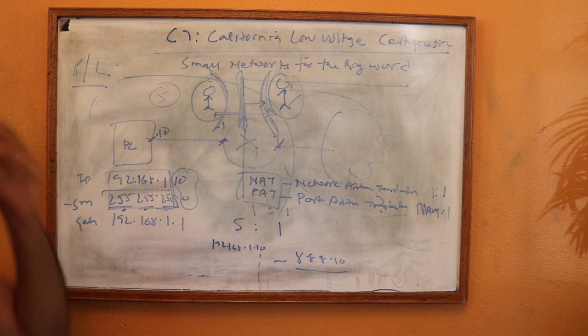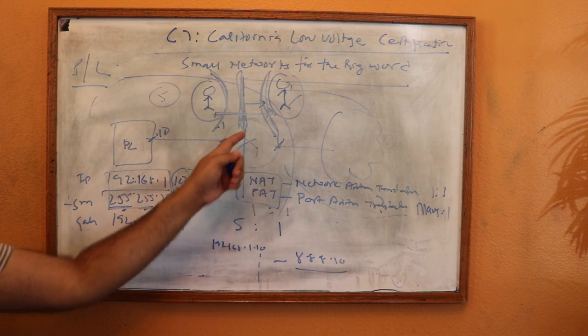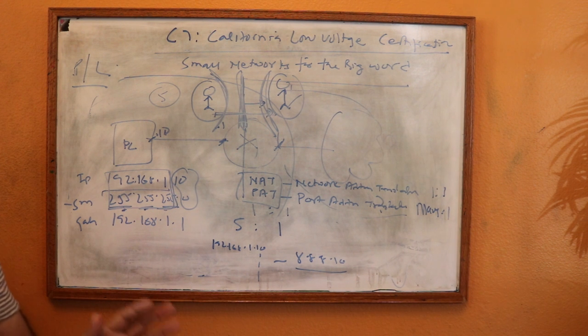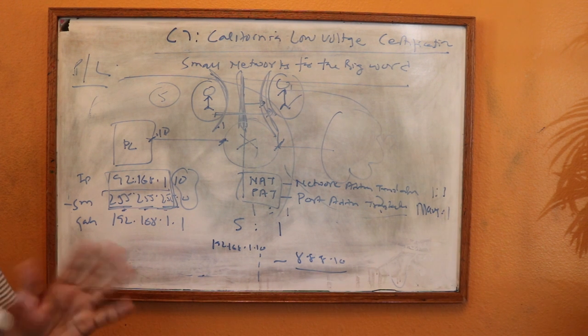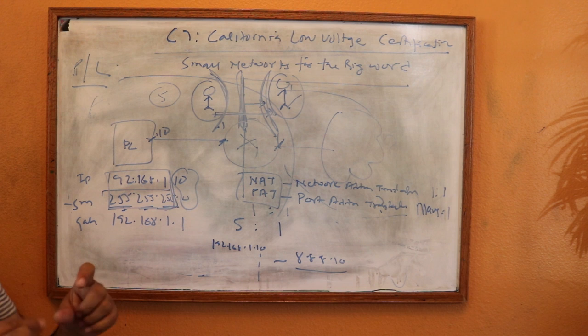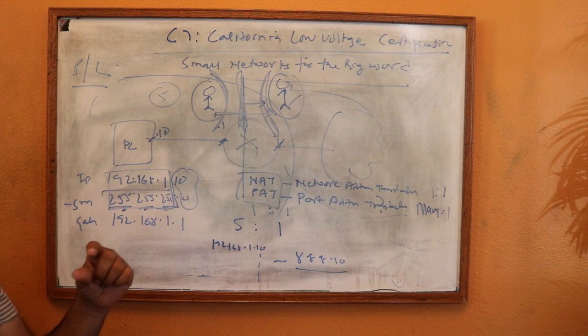Port Address Translation means that this particular gateway will maintain a list called the Port Address Translation Table. Most of the time it's called a Network Address Translation Table, and it will manage the entries.